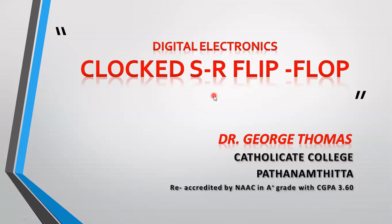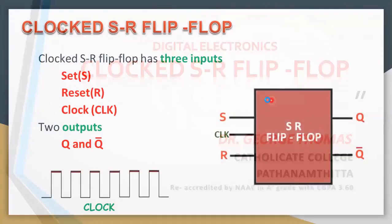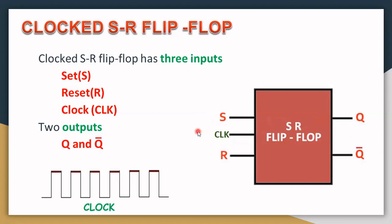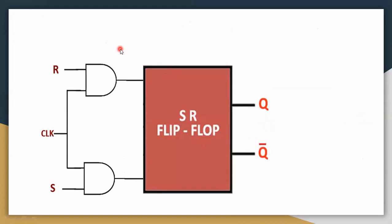Good morning dear students. Today I am discussing about the Clocked SR Flip-Flop, which has three inputs: Set (S), Reset (R), same as the SR flip-flop, and an additional Clock input. We have two outputs Q and Q dash. This is a positive triggering clock, so when the clock goes high, we get a change in the output.